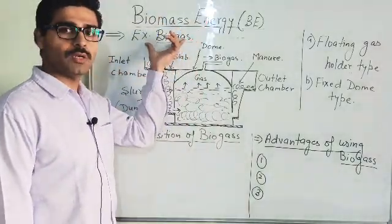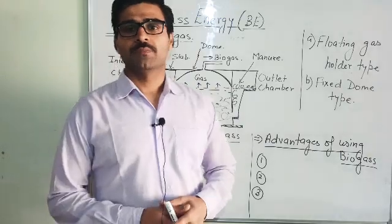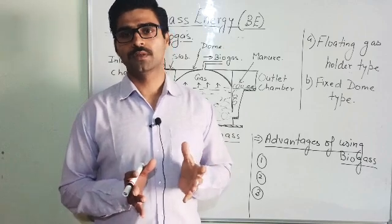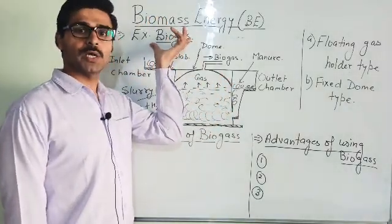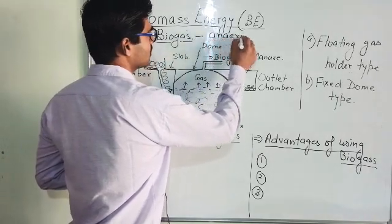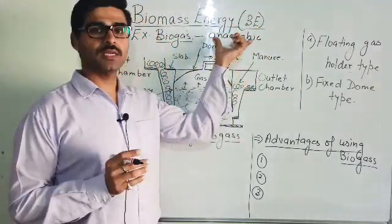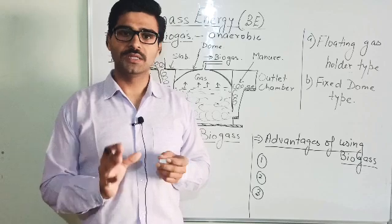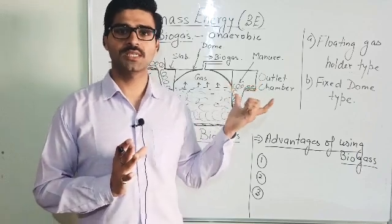Now I will consider one well-known example of biomass energy: biogas. Biogas is generated from cow dung, sewage, or agricultural residues. The process of generation of biogas is generally anaerobic in nature, meaning the decomposition of organic matter in the absence of oxygen.